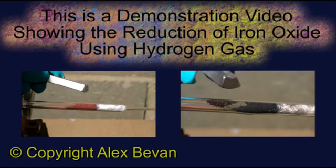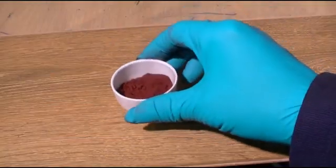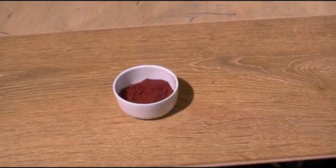This is a demonstration video showing the reduction of iron oxide using hydrogen gas. Iron oxide can occur in multiple states. In this demonstration, we are going to be reducing hematite, which appears reddish orange in color.